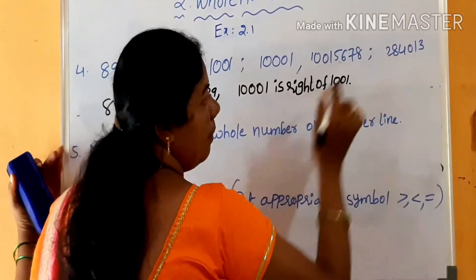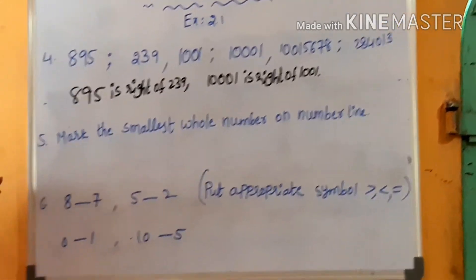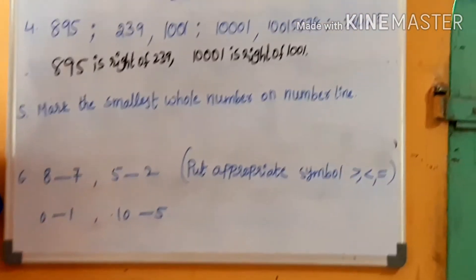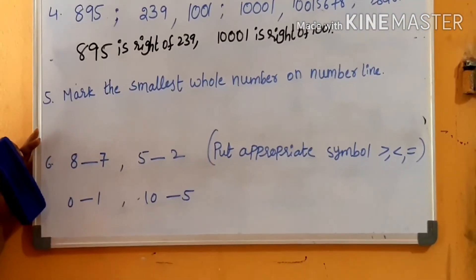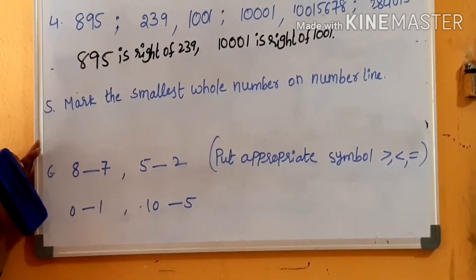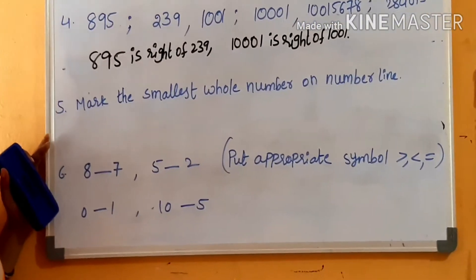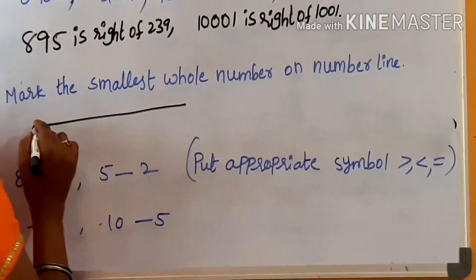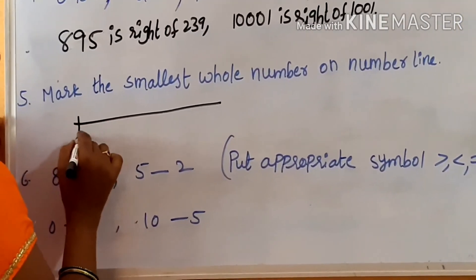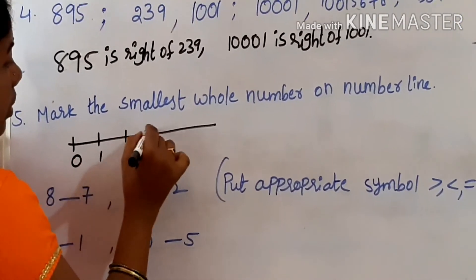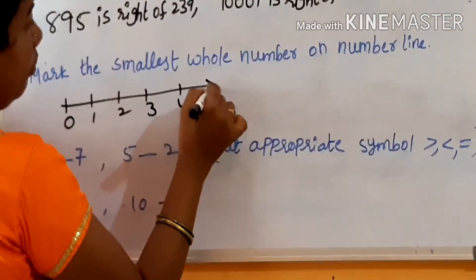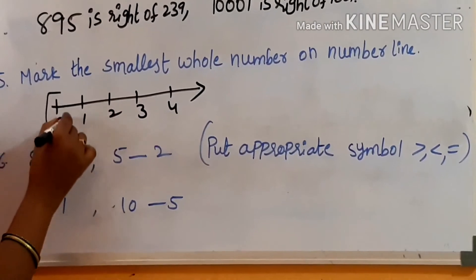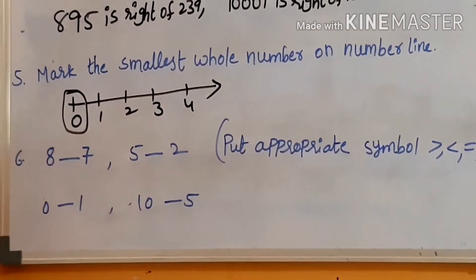Next, mark the smallest whole number on the number line. What is the smallest whole number? Yes, very good — 0 is the smallest whole number. So we mark 0 on the number line: 0, 1, 2, 3, 4. Here 0 is the smallest whole number.